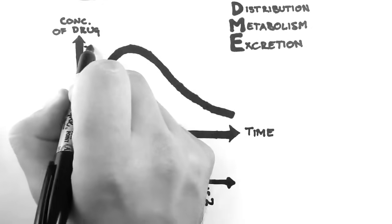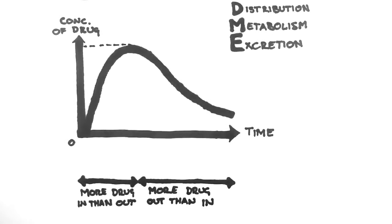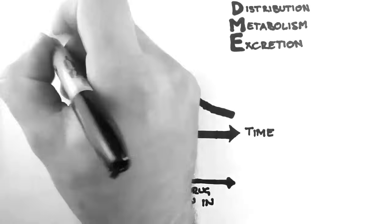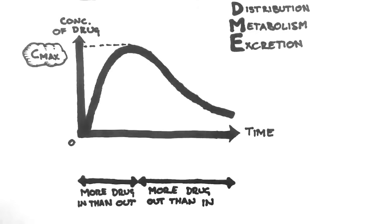This point at the top of the graph is important, because it is the highest concentration of drug in the body. Therefore, we call this the maximum concentration, or Cmax. This is important because knowing the maximum concentration can help predict the therapeutic benefit, and also the likelihood of side effects.